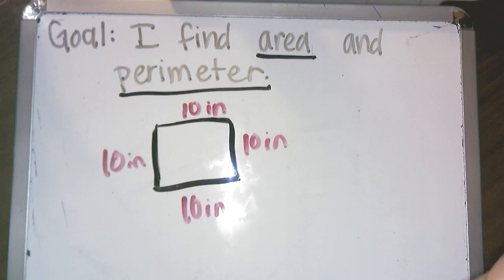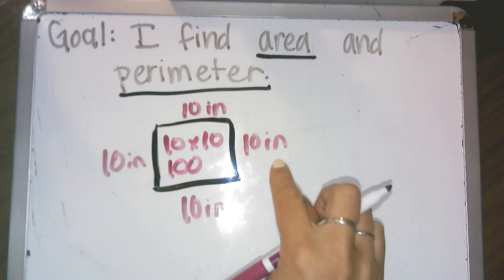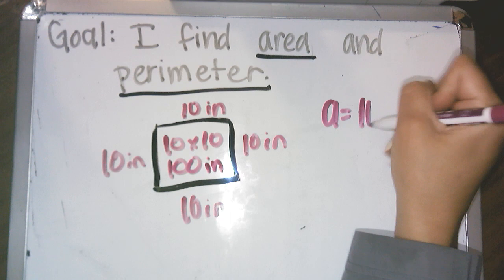...and to find the area, the inside, I need to do length times width or 10 times 10. And 10 times 10 is 100. And because our units are inches, it would be 100 inches. So my area would be 100 inches.